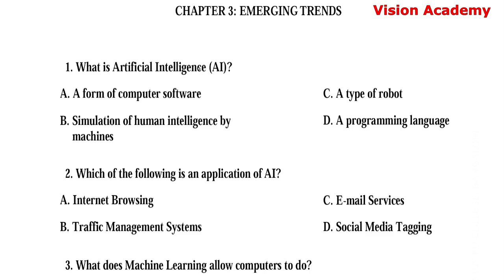What is Artificial Intelligence AI? Option A: A form of computer software. Option B: Simulation of human intelligence by machines. Option C: A type of robot. Option D: A programming language. Here, option B, simulation of human intelligence by machines, is the right answer.